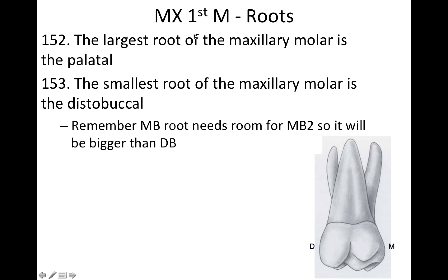Now we're going to get into the roots. The largest root of the maxillary first molar is the palatal, and the smallest root is the distal buccal. The mesial buccal root needs room for the MB2, so it will tend to be bigger than the distal buccal — that's a way to remember which root is bigger between the mesial buccal and the distal buccal.